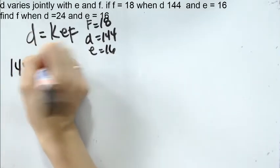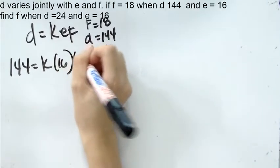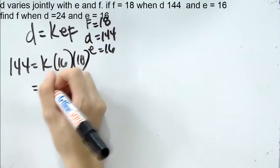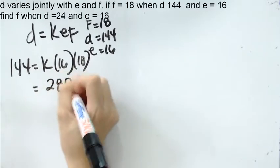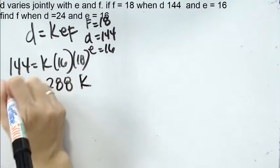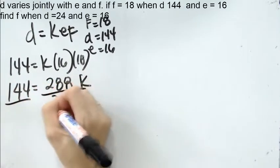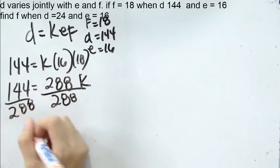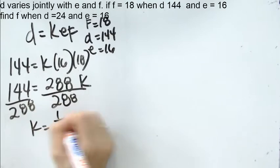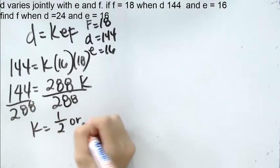144 equals K times 16 times 18. 16 times 18 will give you 288. 288K equals 144. We divide both sides by 288 to isolate K. K equals one-half. We can use one-half or we can also use 0.5.